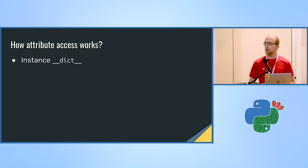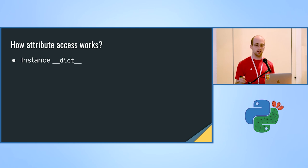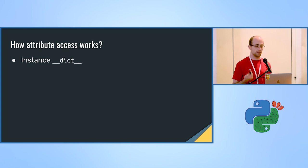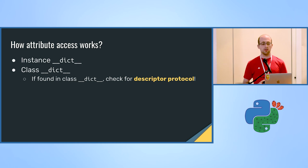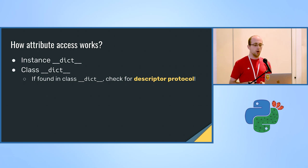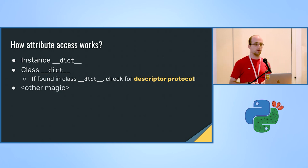When we try to access an attribute, we first go to the __dict__ of the instance — a namespace where values are stored by name for the specific instance. If we don't find the attribute there, we follow the same process for the __dict__ of the class and all other classes in the hierarchy. And here is where the magic happens: if we find something in the class __dict__ that implements the descriptor protocol, we can do quite a lot of fancy things. If not, we continue with other Python dark magic like __getattr__ and so on.